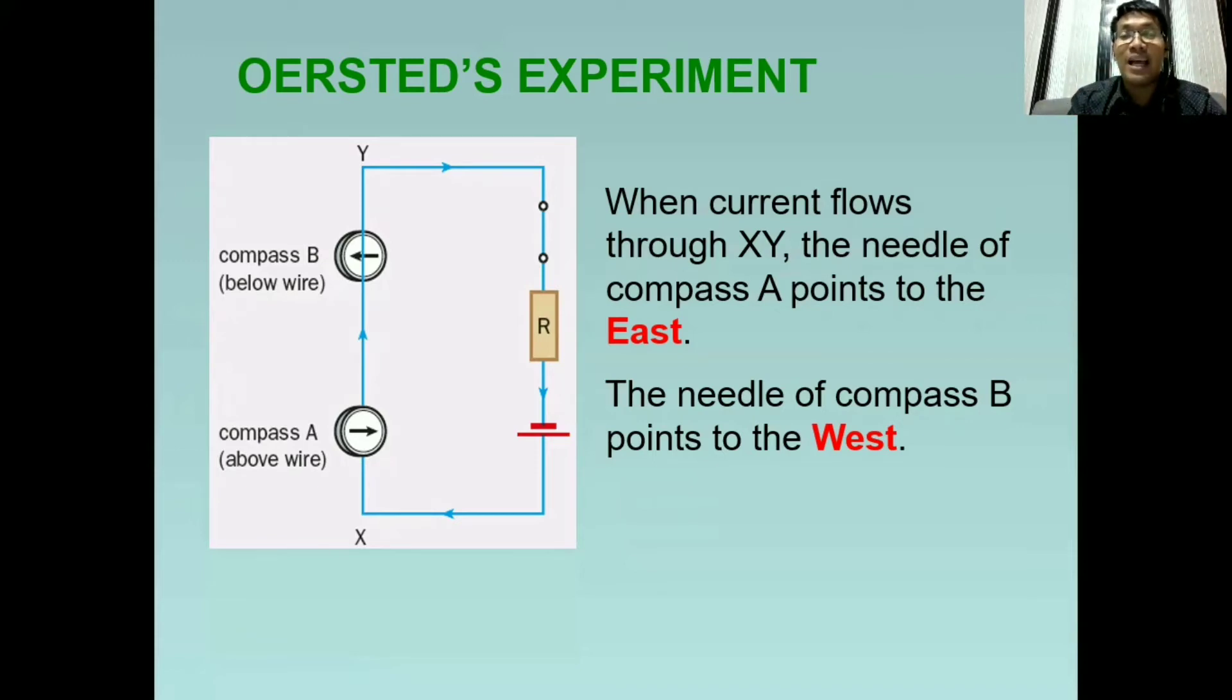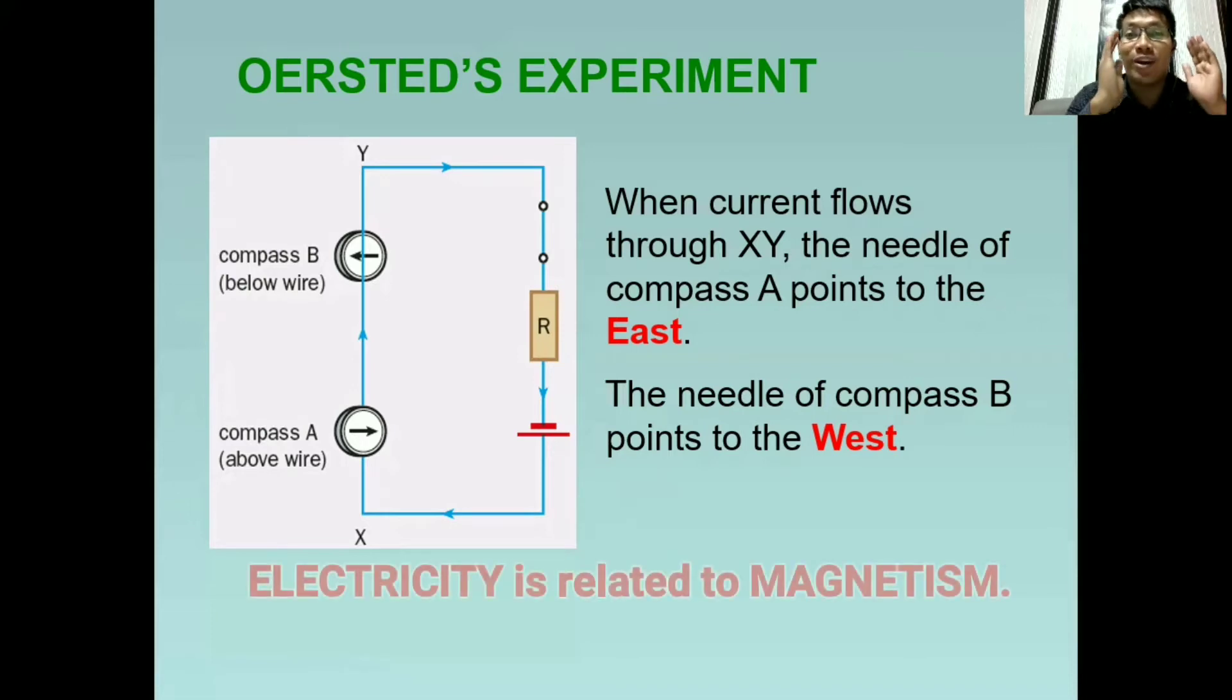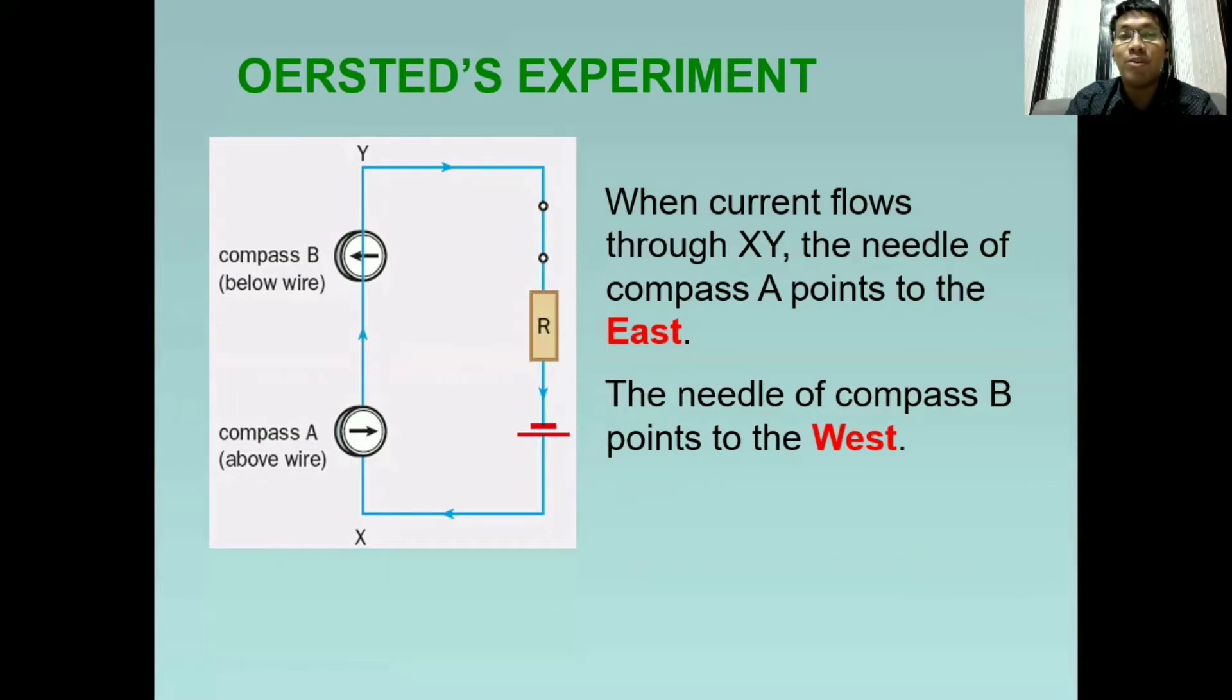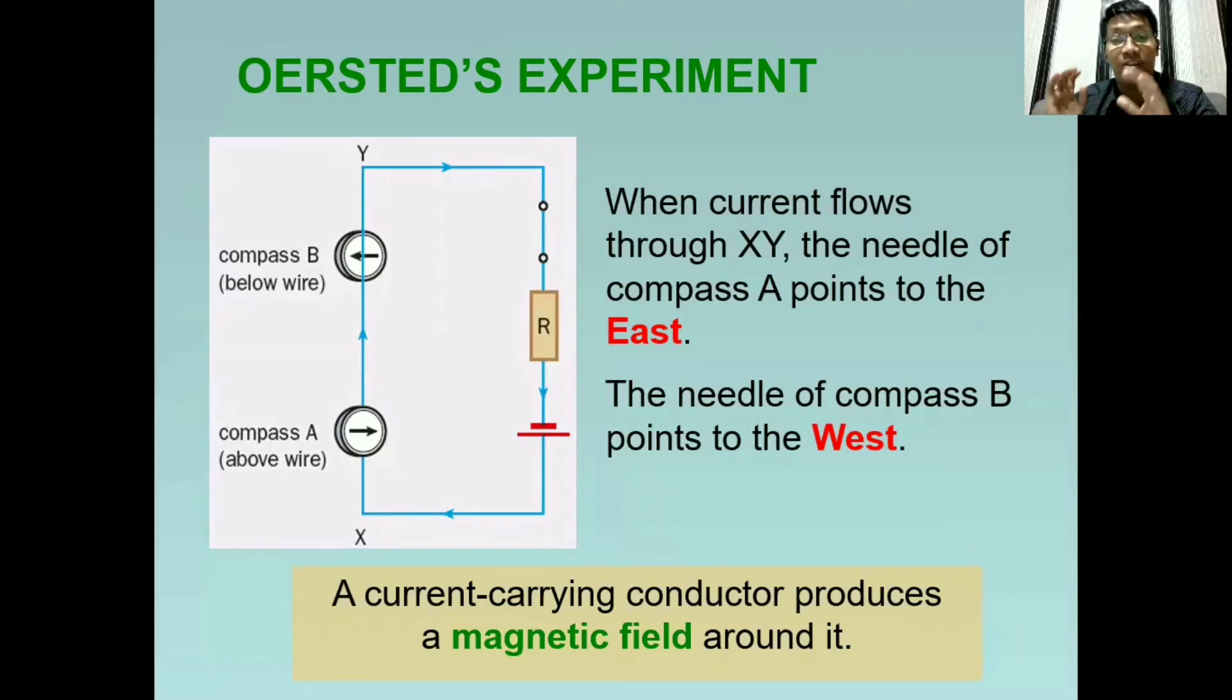But what is the point of this experiment? Orsted found out that electricity or current flowing through a wire can also produce magnetic field. That's why the needle pointing to the north originally is now changed. Dahil sa experiment ni Orsted na ito, nalaman natin na may koneksyon ang electricity at ang magnetism. And this is when the electromagnetism was born. The key point that we have to remember in here is that a current carrying conductor produces a magnetic field around it.